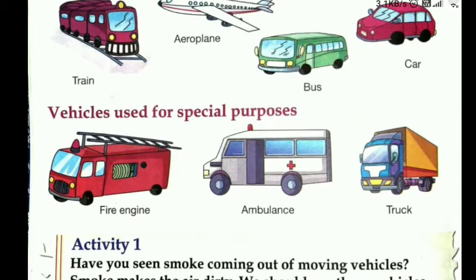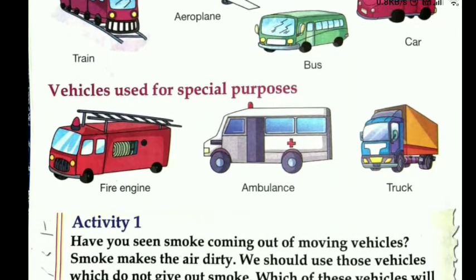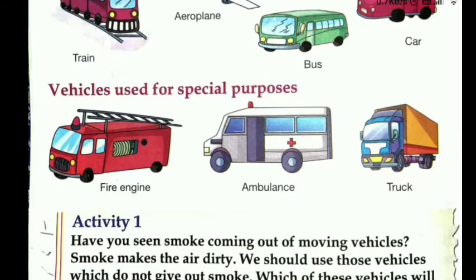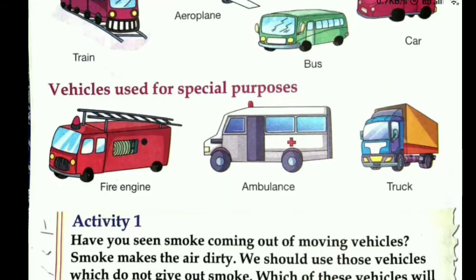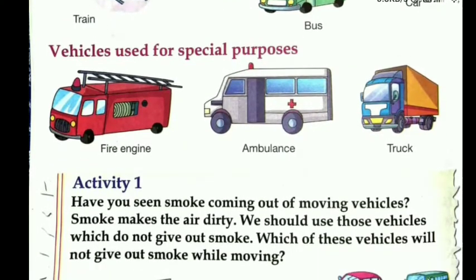Kuch aise bhi vehicles hote hain jo hum kisi special purpose ke liye use karte hain — jaise fire engine ki gaadiyaan, ambulance, aur truck. Truck ko basically hum log samaan carry karne ke liye use karte hain. Ambulance is for the patient, and fire engines are used by the firemen jo aag bujhane ka kaam karte hain.